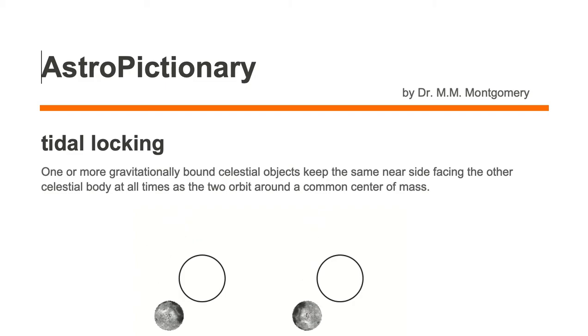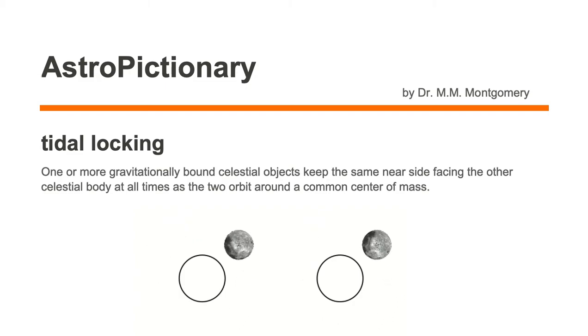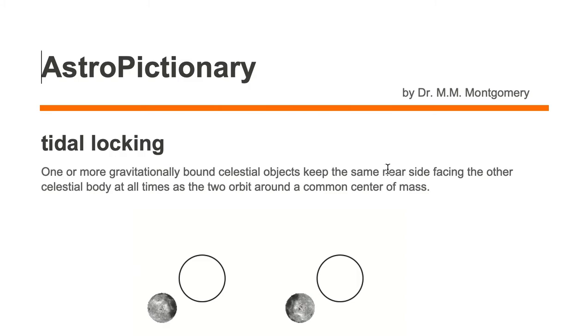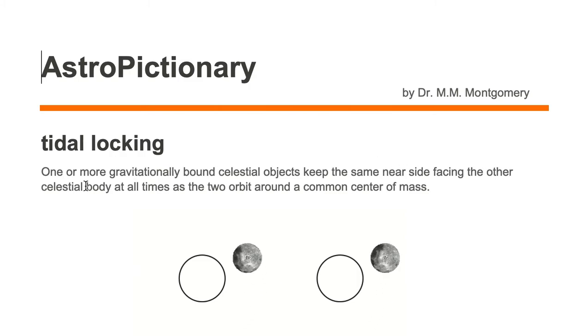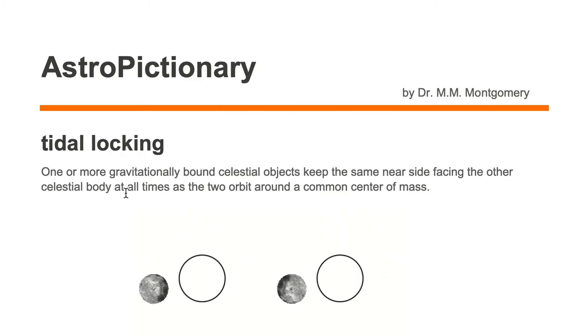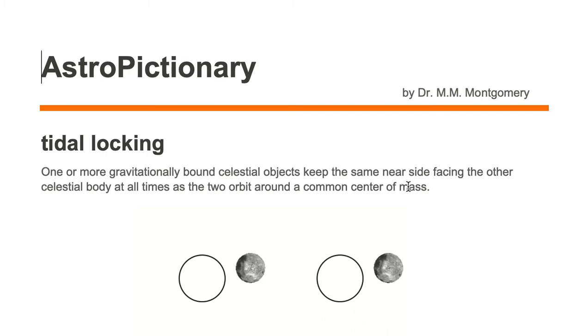Tidal locking is when one or more gravitationally bound celestial objects keep the same near side facing the other celestial body at all times as the two orbit around a common center of mass.